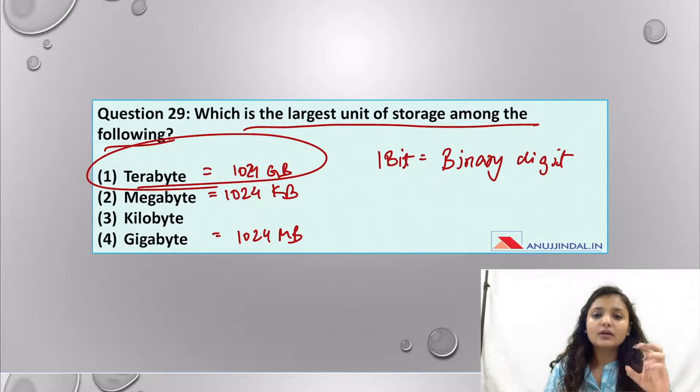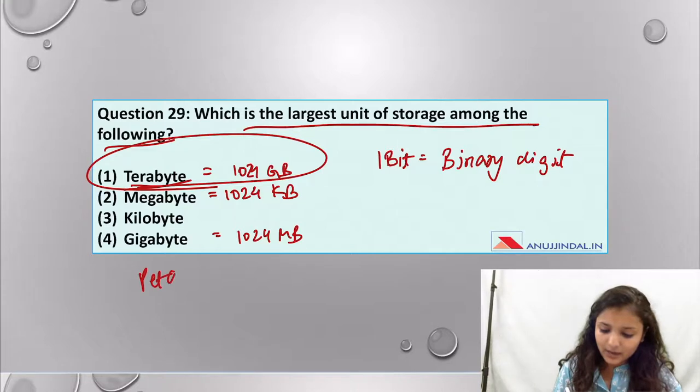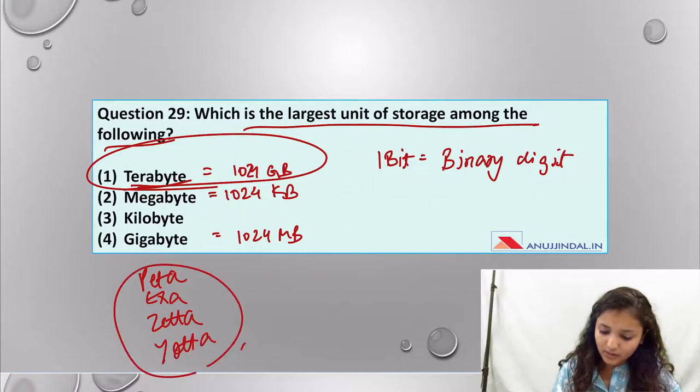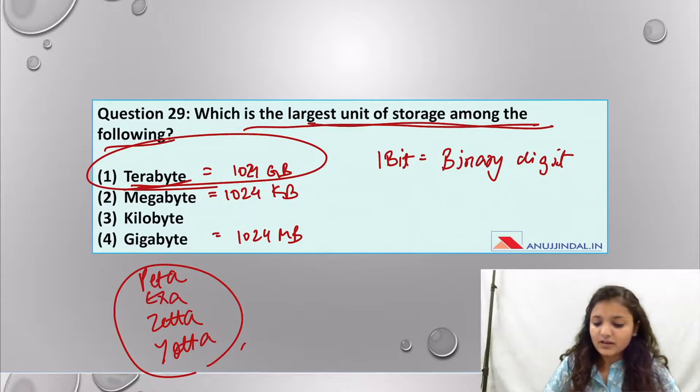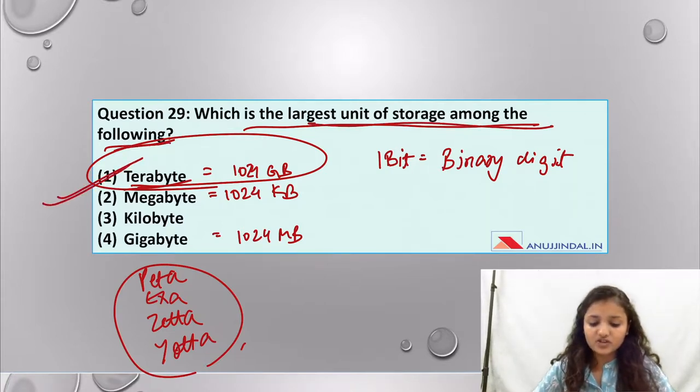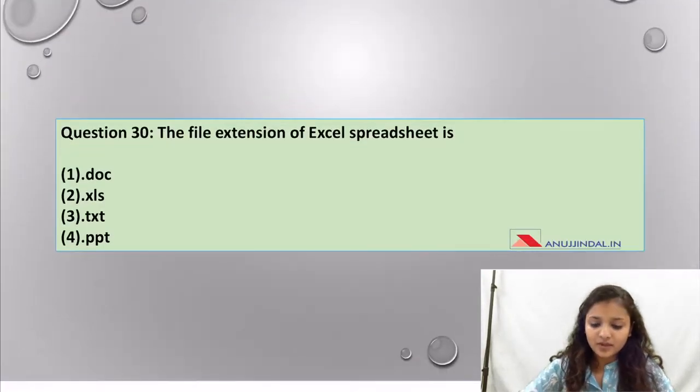After terabyte comes petabyte, then exabyte, then zettabyte, and then yottabyte. So the largest unit of storage among the following options would be terabyte, option number one.